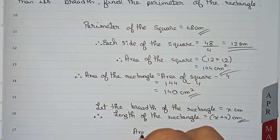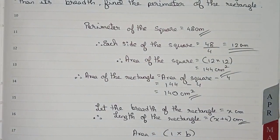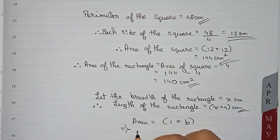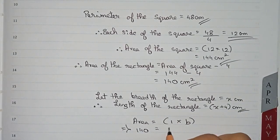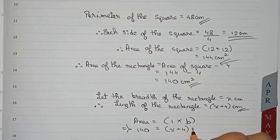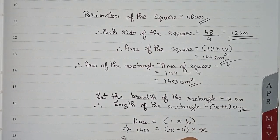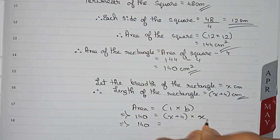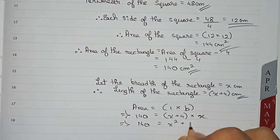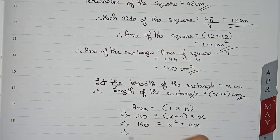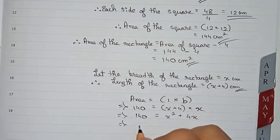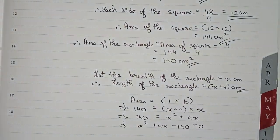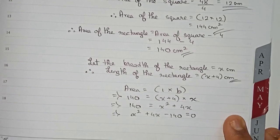We put down the values: area is 140, and length is x plus 4 multiplied by x. Solving this: 140 is equal to x squared plus 4x. Rearranging, it becomes x squared plus 4x minus 140 is equal to 0. Now it has entered the quadratic form.